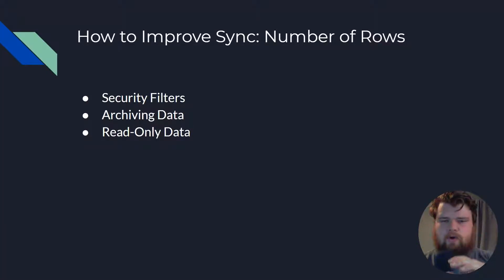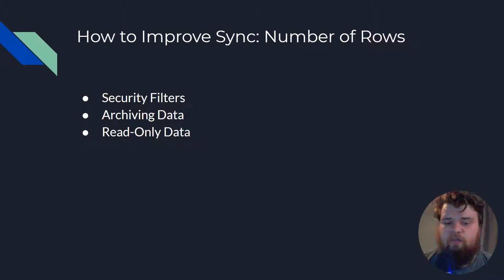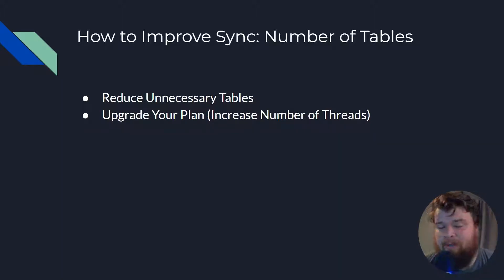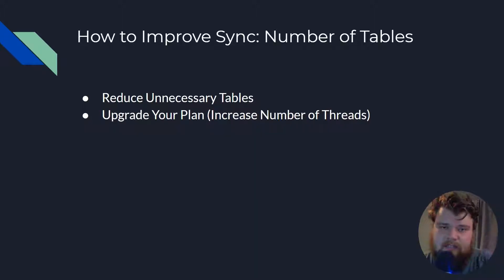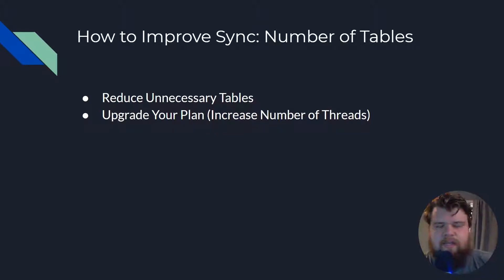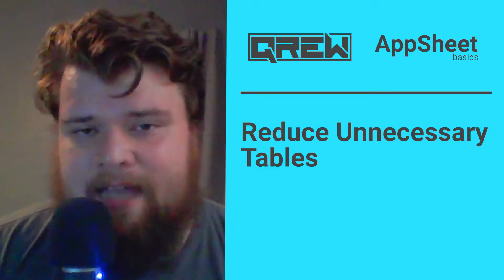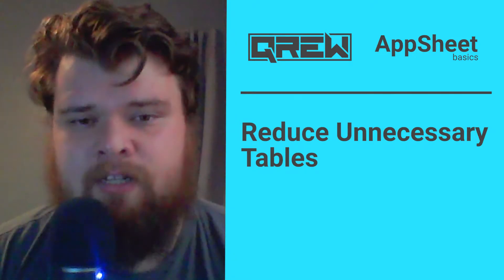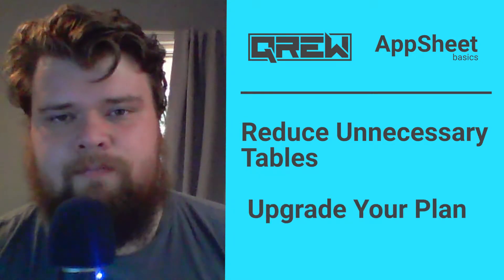Those are the things you can do to improve efficiency of bringing data in. Next we've got number of tables, which is a little harder — there aren't as many options. One option is to bring in fewer tables. If you can delete some tables by making them enum values with static options, that is a great option. I often make dropdowns of certain tables reference other tables, but if I can instead remove that table and make it a static dropdown, I'll improve efficiency by bringing in fewer tables.